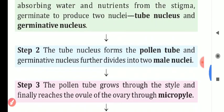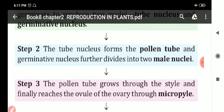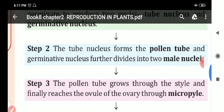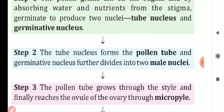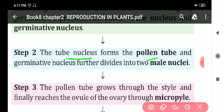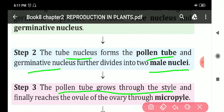Step 2: The tube nucleus forms the pollen tube, and the germinative nucleus divides to form two male nuclei. The pollen tube grows through the style and finally reaches the ovule of the ovary through the micropyle.